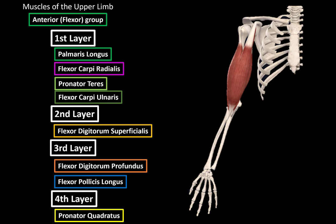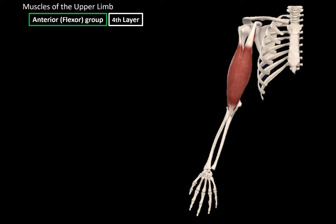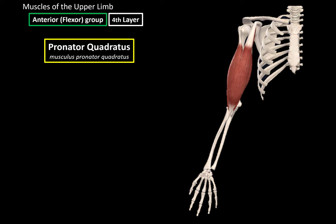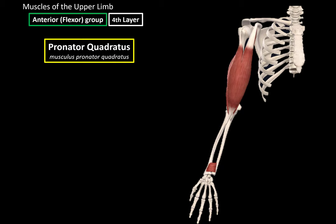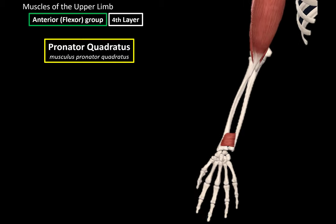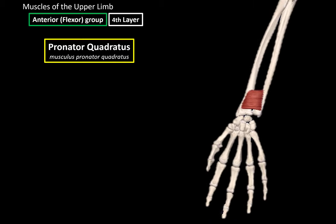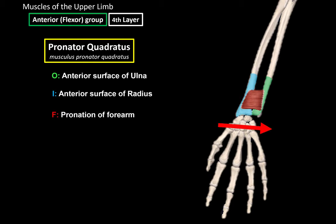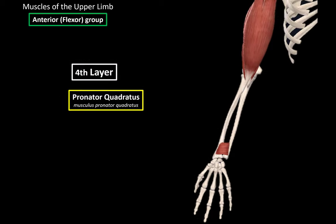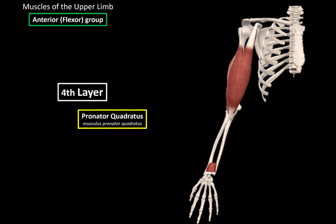Starting with the deep layer and working superficially — the pronator quadratus is located down here. It originates from the anterior surface of the ulna and inserts at the anterior surface of the radius. Its function is pronation of the forearm, meaning rotation of the palm to the back. It's a very small and straightforward muscle.